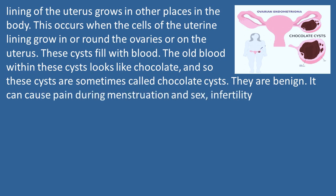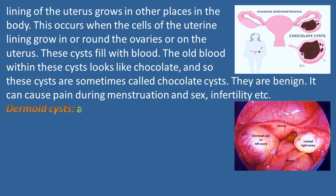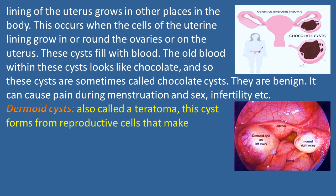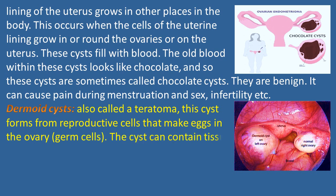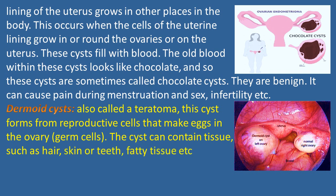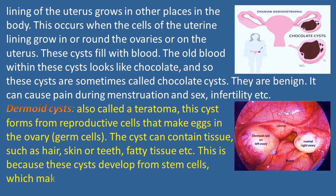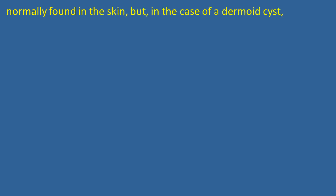Dermoid cysts, also called a teratoma, form from reproductive cells that make eggs in the ovary — germ cells. The cyst can contain tissue such as hair, skin, teeth, or fatty tissue. This is because these cysts develop from stem cells which make skin cells and other similar cells. These stem cells are normally found in the skin, but in the case of a dermoid cyst, they have become trapped in the wrong area during early development as a fetus.